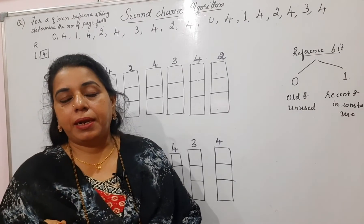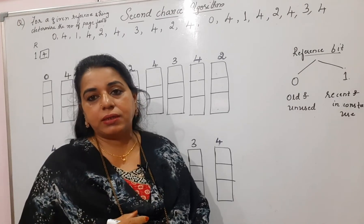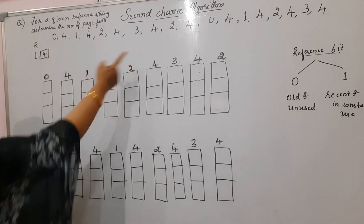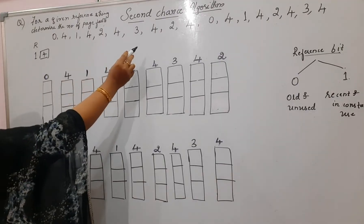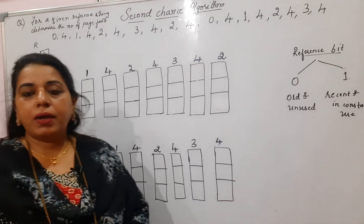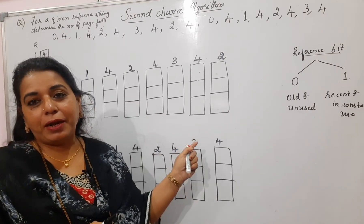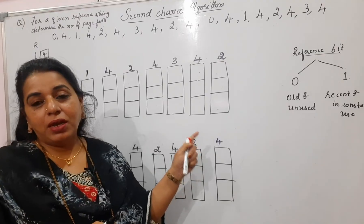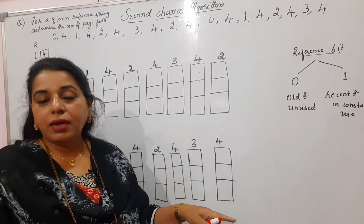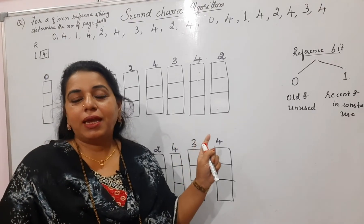Let's see how reference bits are assigned and how they change from zero to one. The example reference string is: 0, 4, 1, 4, 2, 4, 3, 4, 2, 4, 0, 4, 1, 4, 2, 4, 3, 4. These kinds of reference strings have particular pages repeated many times, so you need to be careful about whether to replace or not, and how the reference bit changes.